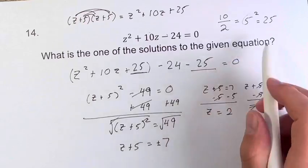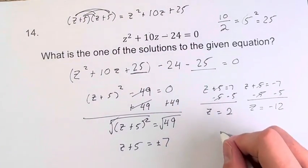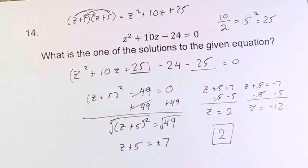So we're asked which is one of the solutions to the given equations. All you have to do when you're on your actual SAT is you just write one of them down. In this case, 2, for example, is our final answer.